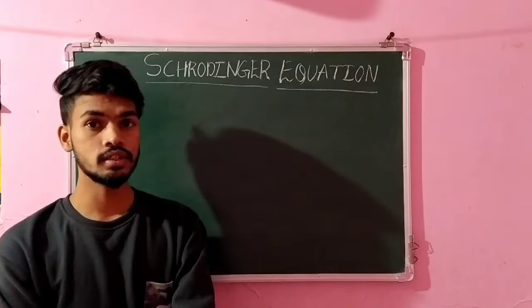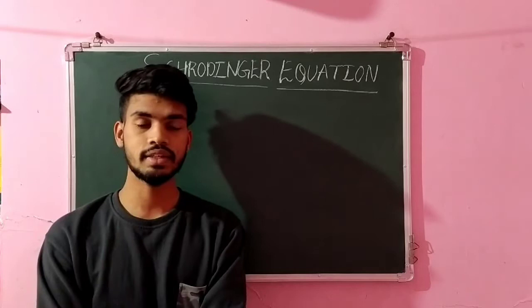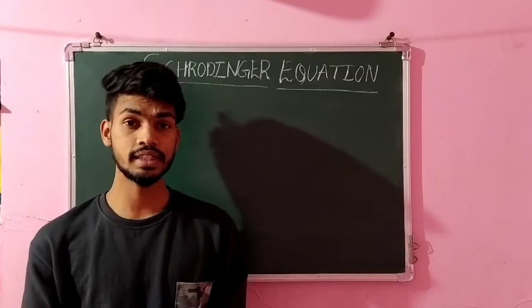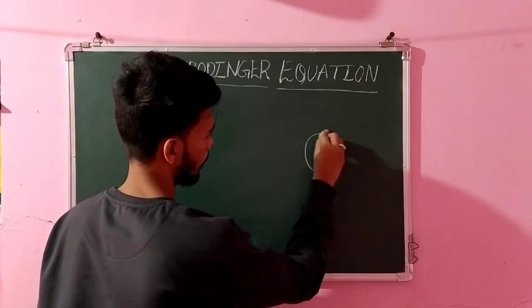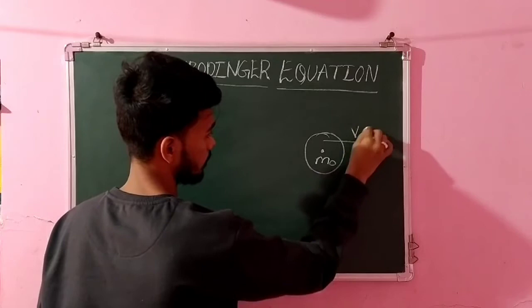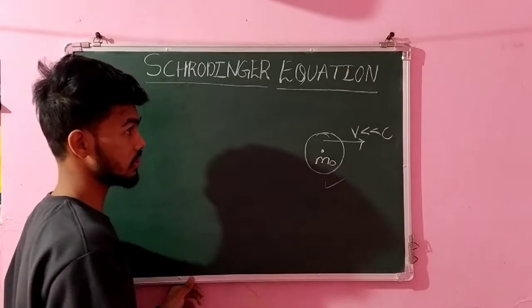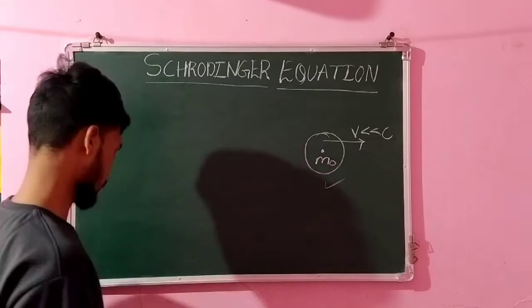So before going to Schrödinger equations, let's know some of the points about Schrödinger equations. So this Schrödinger equation is defined for non-relativistic particles. A non-relativistic particle is one whose rest mass energy is greater than that of the kinetic energy. So the particles which are moving less than the speed of light. Suppose you consider a particle of mass M0, so it's moving with a velocity V, which is always less than C. And Schrödinger equation is applicable for spinless particles, non-relativistic as well as spinless particles.